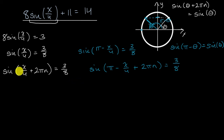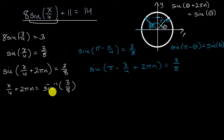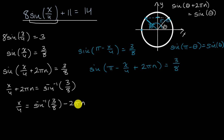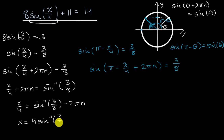For the first expression, taking the inverse sine of both sides gives X over four plus 2πN equals inverse sine of 3/8. Subtracting 2πN from both sides: X over four equals inverse sine of 3/8 minus 2πN. Since N can be any integer, the sign in front doesn't matter. Multiplying both sides by 4: X equals 4 times inverse sine of 3/8 minus 8πN.